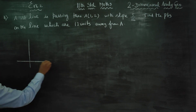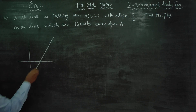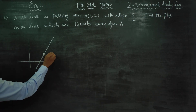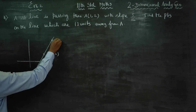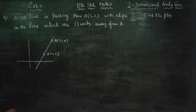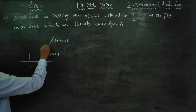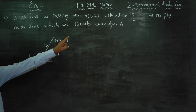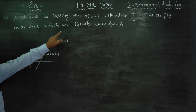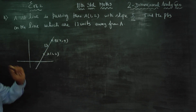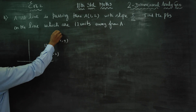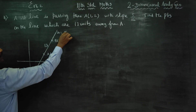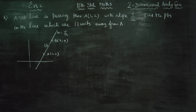For example, if this is a straight line, if A point is (1,2), we say B point is (x,y). M is equal to 5 by 12.